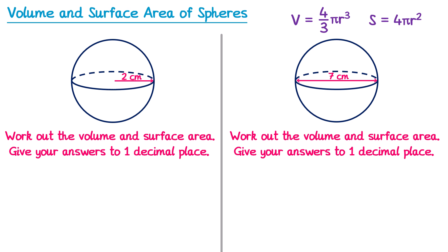For the first sphere's volume, we do volume equals 4/3 multiplied by π, multiplied by r³, and r is 2, so 2 cubed. Typing this into your calculator and rounding to one decimal place gives 33.5 centimeters cubed.